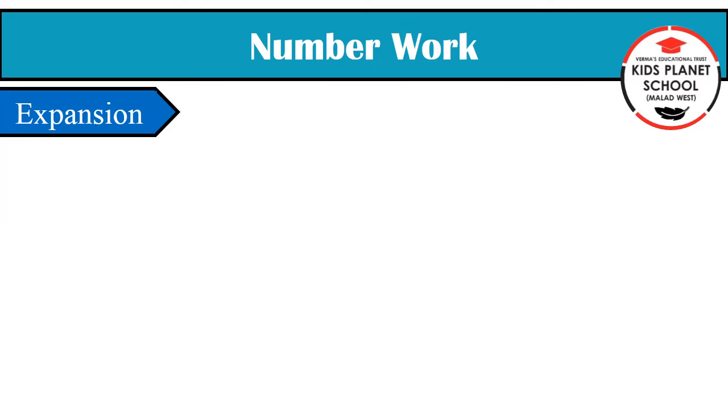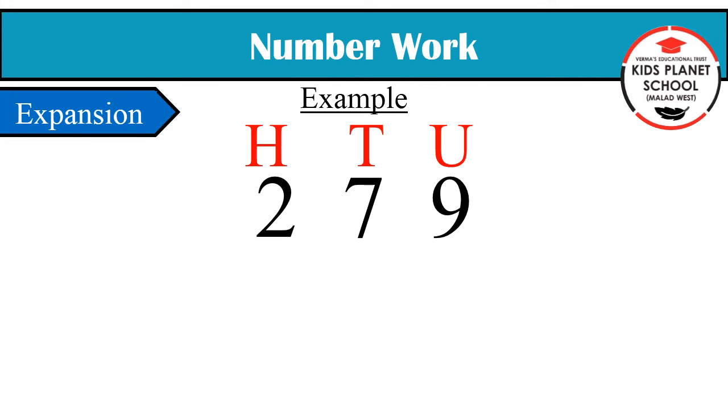Let's see an example. Here, the positions of the numbers are already given. Now we have to expand the given number. So first, we will start with 2. 2 is at the position of 100, so we will write 200. Or we can also write the short form of 100, that is 2H.